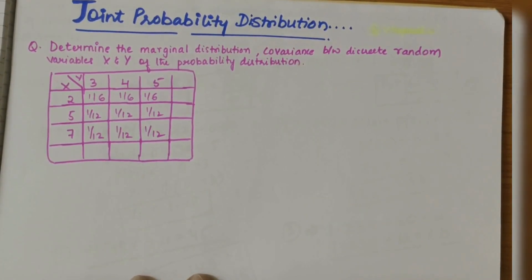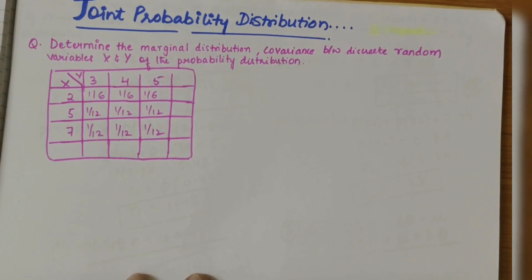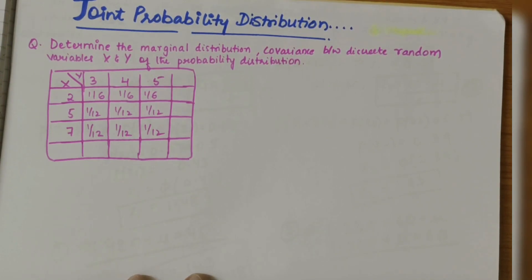In this video, I will be solving a question related to joint probability distribution. The problem statement says to determine the marginal distribution and also to find the covariance between discrete random variables x and y of the probability distribution.